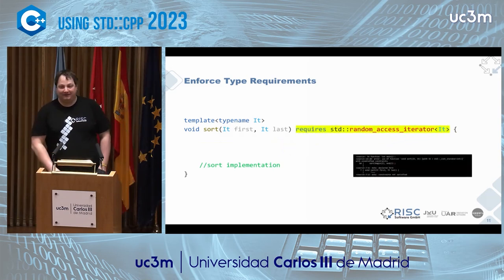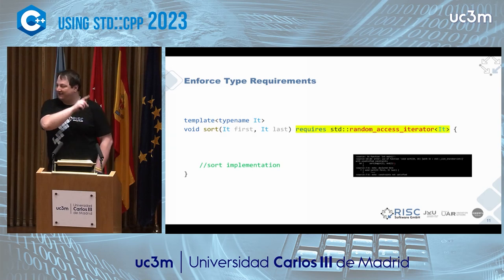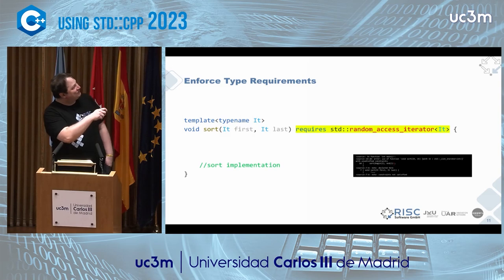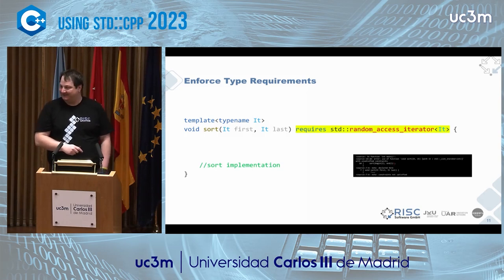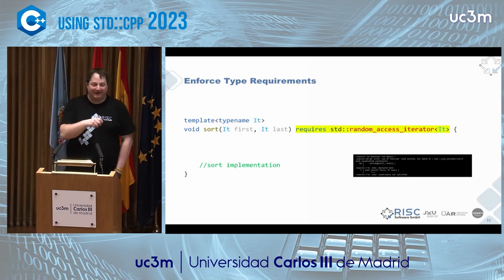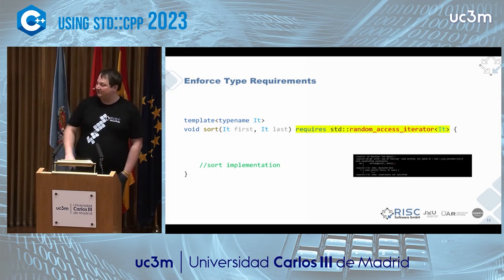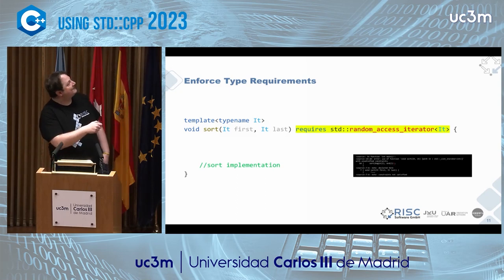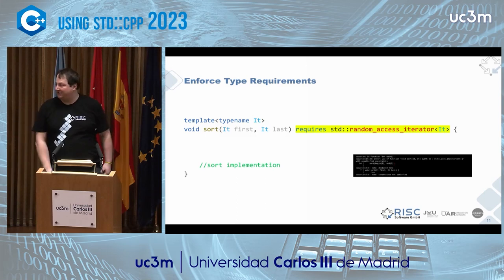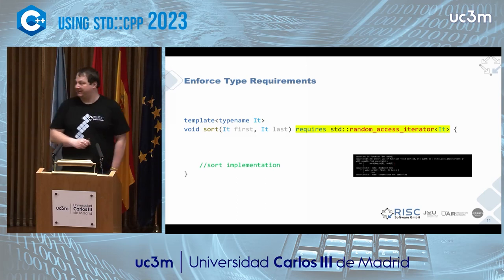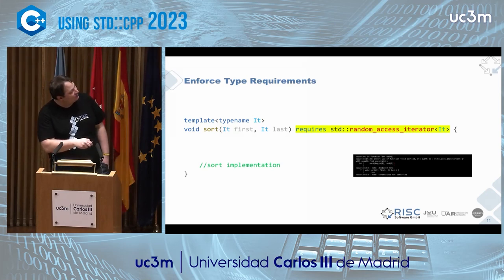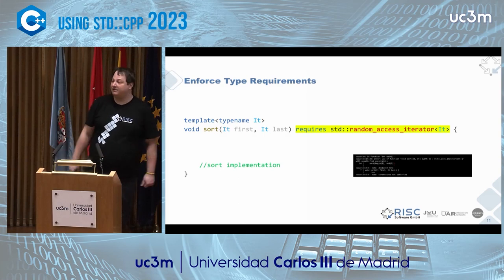Can we improve on this with concepts? We'll keep this in the implementation and just say requires random access iterator. This will work. The static assert message changes only slightly, but that's way more readable — it abstracts how we actually determine what a random access iterator is. The problem is it's still in the implementation: we still have an untyped interface and then check whether we match the requirements. That's better, but let's move this to the interface. So we can suffix a template with this requirement. The error message already changes — it tells us there's no sort that we can call.